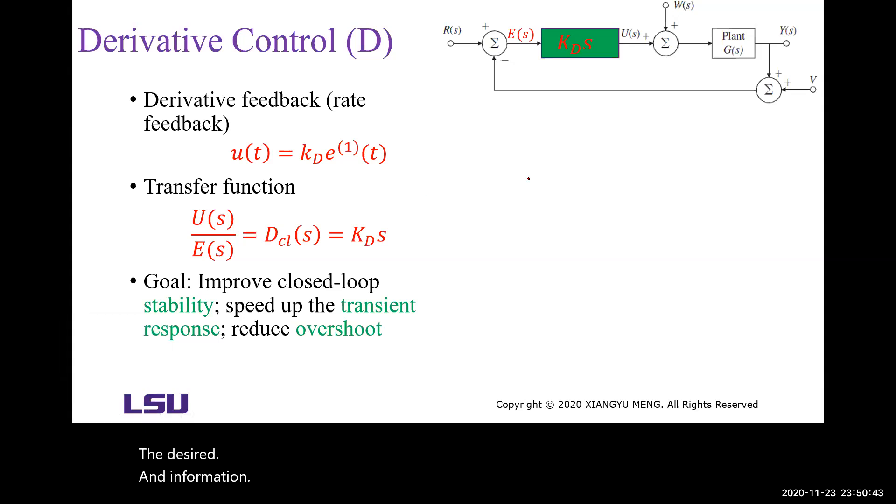For example, if you consider the steady state, the system error is a constant. When the error is constant and the error signal is differentiated, then it becomes zero. Then if the control signal is zero, the output is zero and the output will not track the reference input.